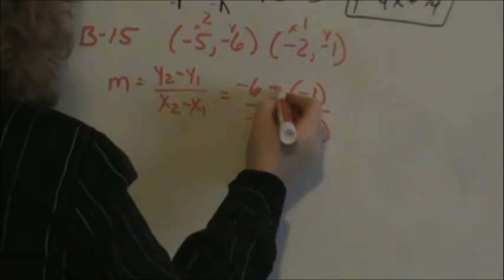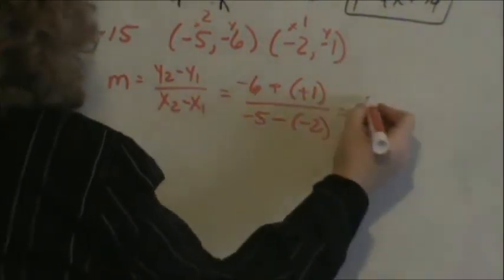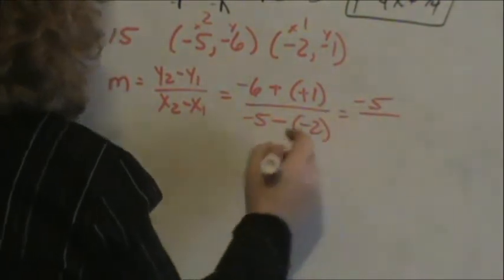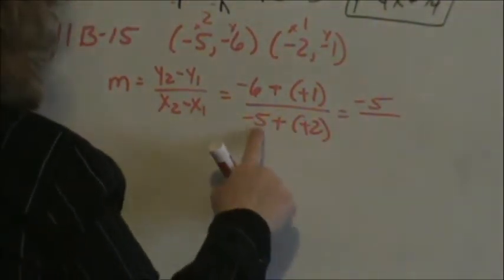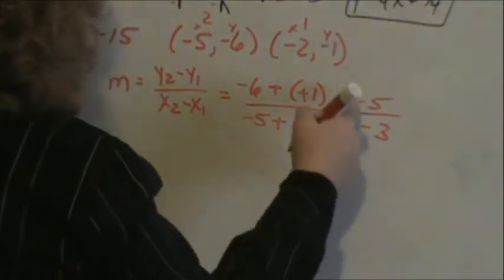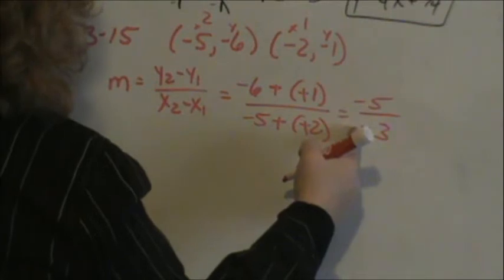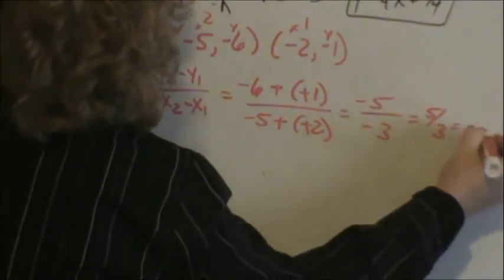So, negative 6 plus 1, negative 5. Minusing a negative now becomes positive. A negative 5 adding 2 is negative 3. What is a negative divided by a negative? A positive. So our slope is 5 thirds, a positive 5 thirds.